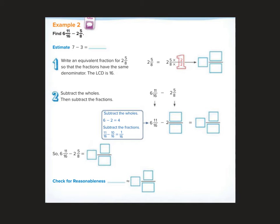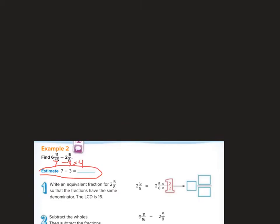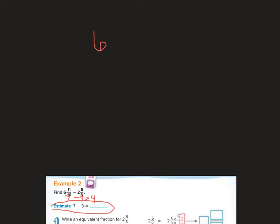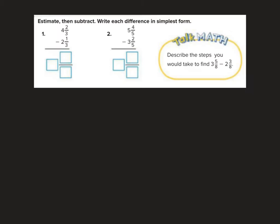Okay, here we go. We need to do 6 and 11 sixteenths minus 2 and 5 eighths. Yeah, it always is good to estimate. This is about 7 minus 3, so that should be about 4. 6 and 11 sixteenths minus 2 and 5 eighths. Notice I do not have common denominators, so that's my first step is get those common denominators. I'm going to get 10 sixteenths. So I have 11 sixteenths minus 10 sixteenths is going to give me 1 sixteenth. 6 minus 2 is 4. 4 and 1 sixteenths is my answer for this one. And is 4 and 1 sixteenths close to 4? It is, so we are good to go.